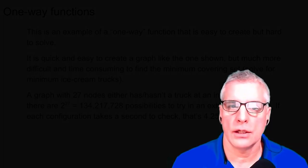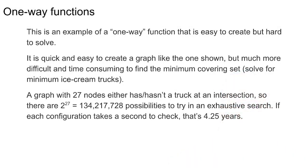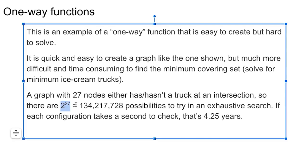So this, again, is an example of a one-way function. It's easy to create, hard to solve. So a graph with 27 nodes, like we saw there, either does have or doesn't have a truck at each intersection. So that gives you 2 to the 27th equals big number of possibilities to try in an exhaustive search. So if each configuration takes a second to check, be four and a quarter years, which is a long time.